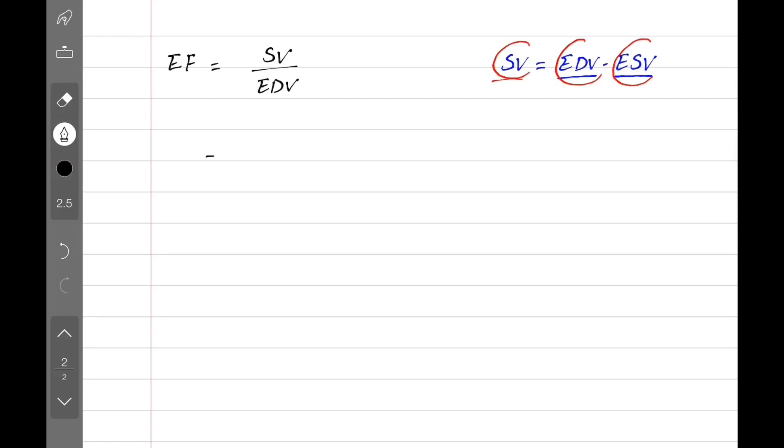So we can expand our equation for ejection fraction. Instead of stroke volume, we can put the equation for stroke volume here. End diastolic volume minus end systolic volume divided by end diastolic volume.